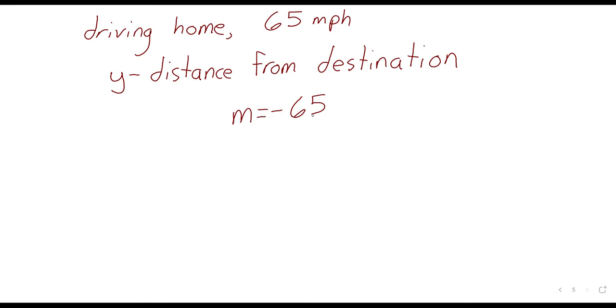So it would probably make more sense here for y to be your distance from your destination. And as time passes, your distance from your destination is decreasing. Because this distance is decreasing, m will be negative, negative 65. So this is what a linear relationship and sort of this m is in what I would think of as real world context. What's the graph of a linear relationship look like? It's a straight line.